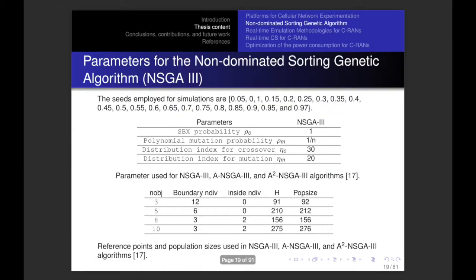I modified and extended this code to create the NSGA-III, which can manage from three to ten objective functions and its diversity is based on reference points. The parameters for the NSGA-III are: the number of realizations, the polynomial mutation probability, the distribution index for crossover, the distribution index for mutations, the population size, and the number of reference points when using problems with different numbers of objective functions.